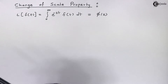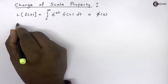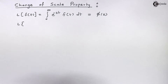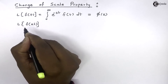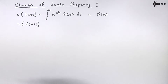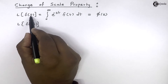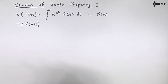So what is the use of change of scale property? By using this property we can find out the Laplace transform of f(at), that is a function of at. As you can see, t is getting multiplied by a, so it is called a change of scale in mathematics.